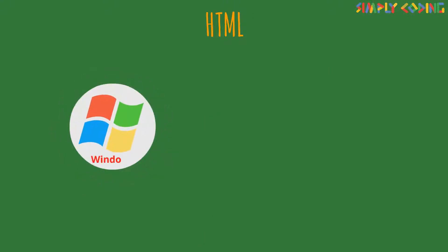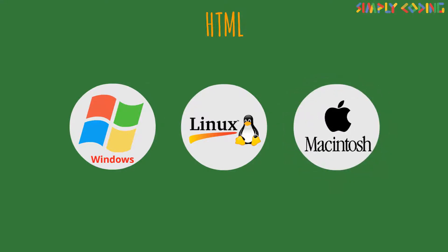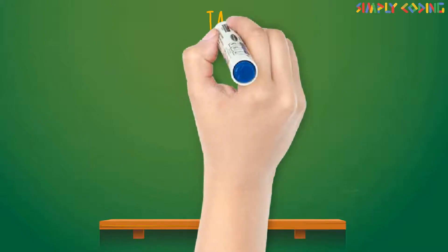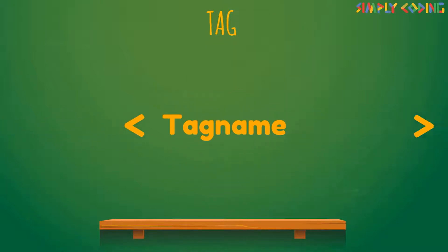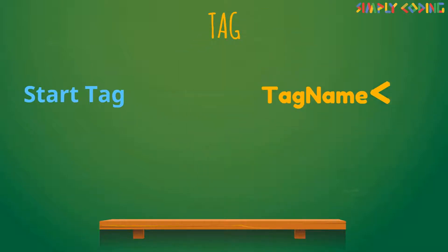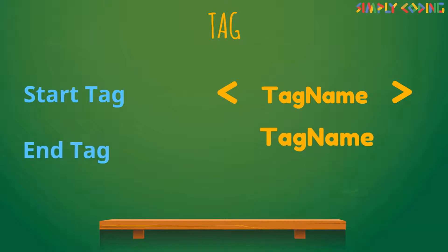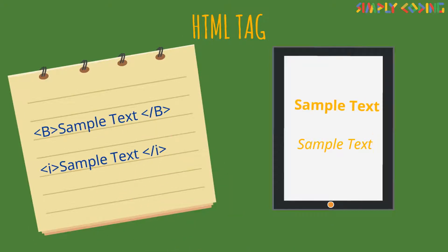This also makes it platform independent because it can be displayed on any platform like Windows, Linux, Mac, etc. Let's understand what is a tag. HTML tags begin with a less-than character and end with a greater-than character. A start tag has a name inside angle brackets, and the end tag has the same name but with a preceding slash. Tags are coded HTML commands which indicate how a web page should be formatted and displayed.